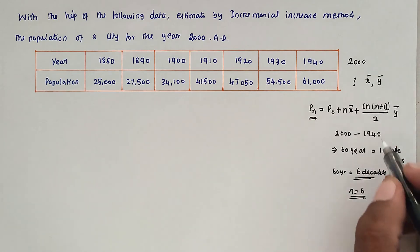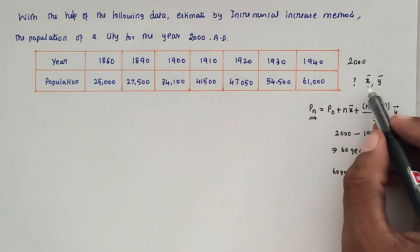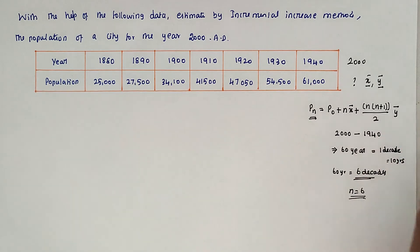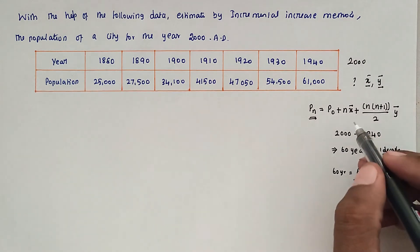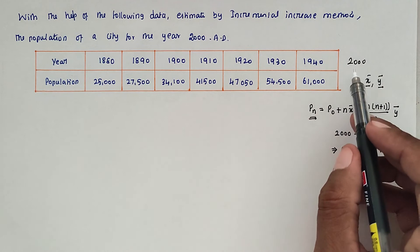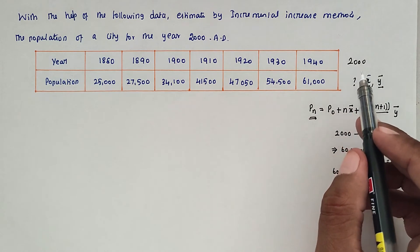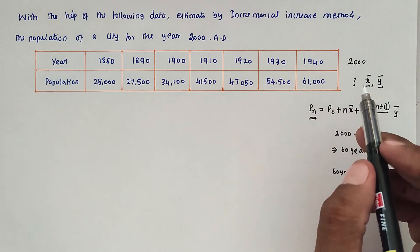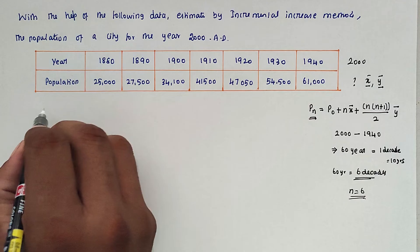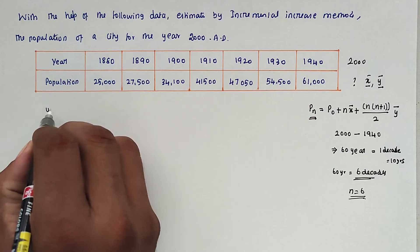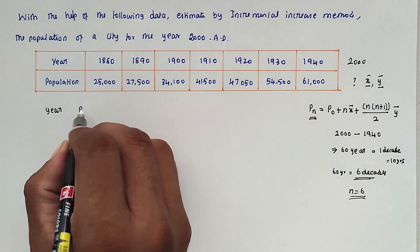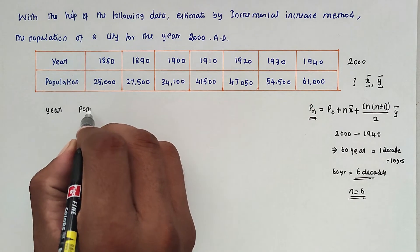We now need to find the x̄ value and ȳ value, then substitute all values into the formula to get the population for 2000. Let's begin the solution by listing the years and their corresponding populations.